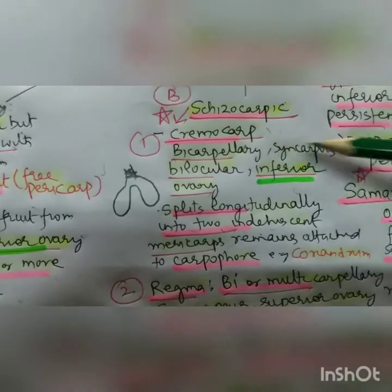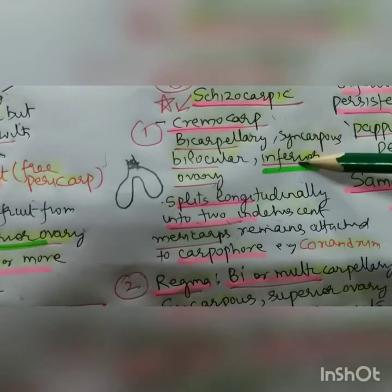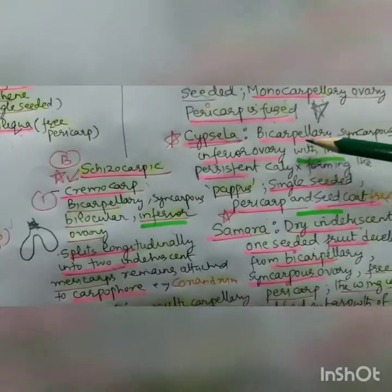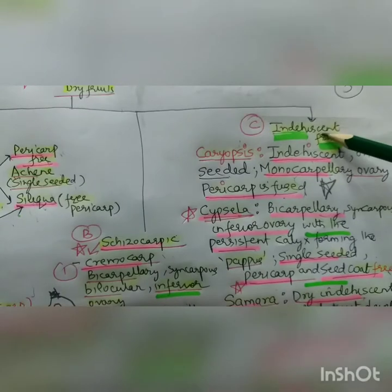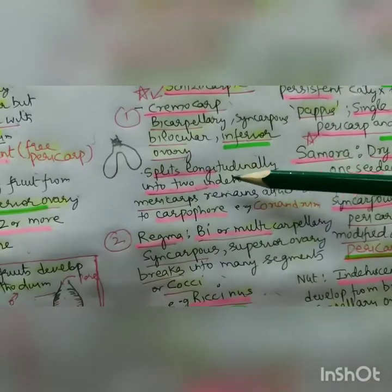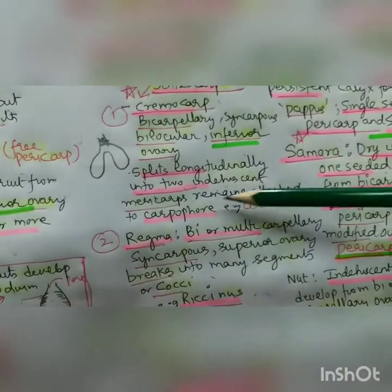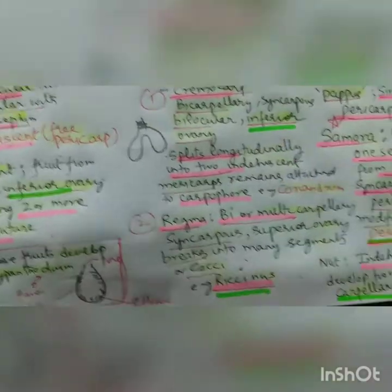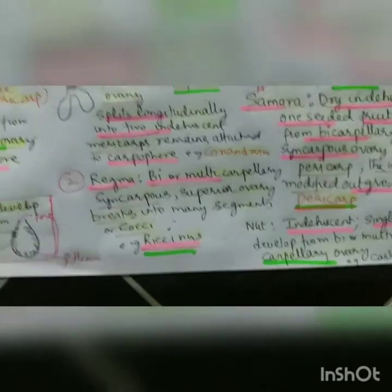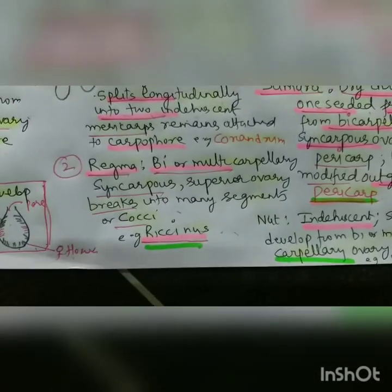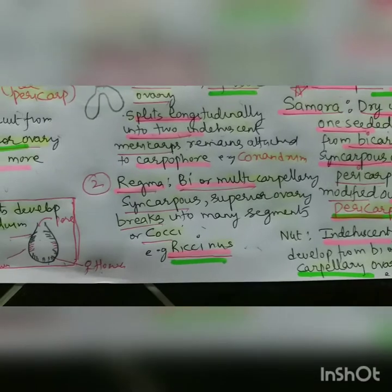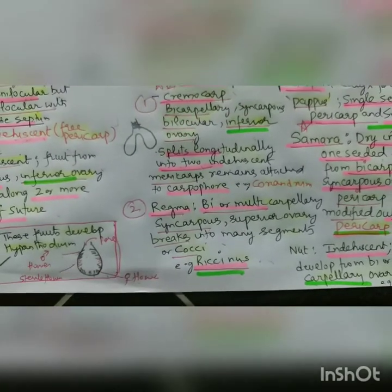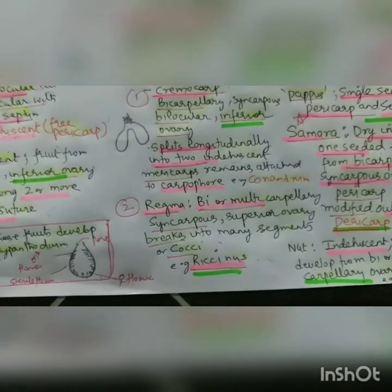Cremocarp is bicarpellary, syncarpous, bilocular, and inferior ovary. The difference between cremocarp and cypsela is that both are bicarpellary with inferior ovary, but cypsela is indehiscent whereas cremocarp splits longitudinally into two indehiscent mericarps arranged by a carpophore. Then we have regma - it is bi- or multicarpellary, syncarpous, superior ovary, which breaks into many segments, not two like cremocarp. The example is Ricinus, that is castor.